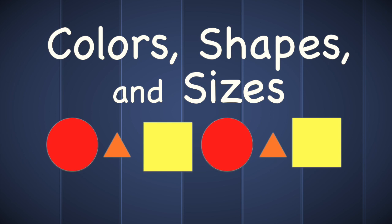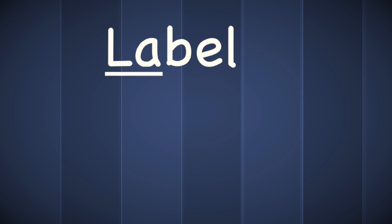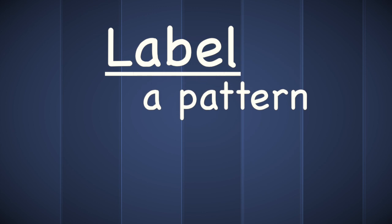Now what if you wanted to tell somebody about your pattern? What if you wanted to give your pattern a name? That's when you label it. So now we're going to talk about how to label a pattern, and we're going to use the alphabet. We're going to start off by seeing how this pattern begins — with a big yellow star. We're going to label this big yellow star with the first letter of the alphabet: A. So the next time we see another big yellow star in this pattern, we're going to label that one as A too.